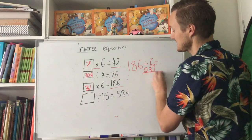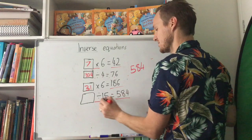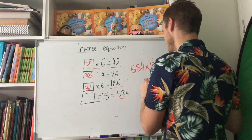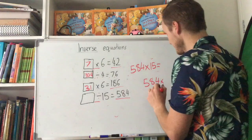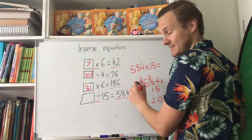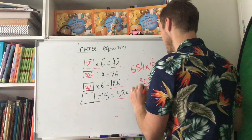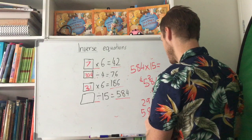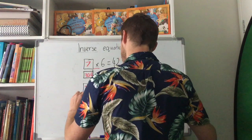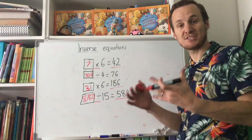Last one: start with the answer 584, change to times — times 15. Let's work it out: 5 times 4 is 20, 5 times 8 is 40 plus 2 is 42, 5 times 5 is 25 plus 4 is 29; then 1 times 4, 1 times 8, 1 times 5 — add them together and you get 8,760. Remember, whichever answer you get, make sure you check it.